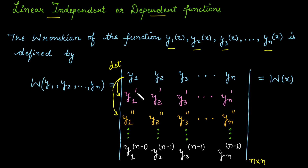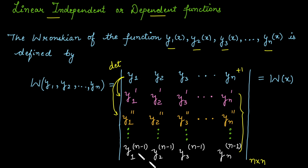We have taken derivatives from order 1 up to n−1, so the total number of rows is n−1 plus the first row, giving n rows total. The number of columns is also n since we have n functions, making it an n by n matrix. Calculate the determinant — once you do, you will get a function in terms of x or a constant, W(x), which is used to identify whether the functions are linearly dependent or independent.